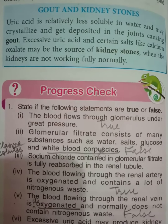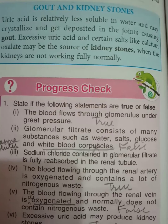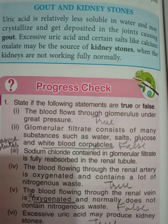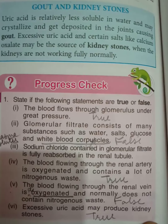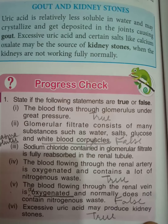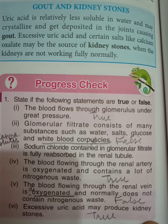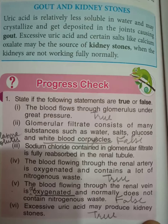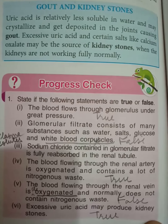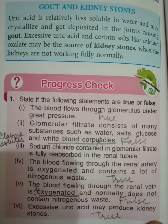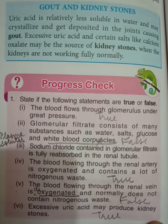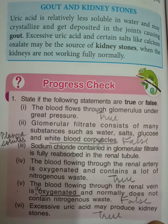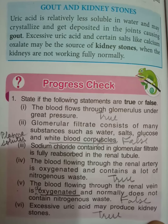For the progress check: the first statement is true, second is false, third is true, fourth is true, fifth is false, and the last one is also true. We correct the second one by replacing WBCs with plasma solutes. We correct the fifth one by stating that blood flowing through the renal vein is deoxygenated and normally does not contain nitrogenous waste.